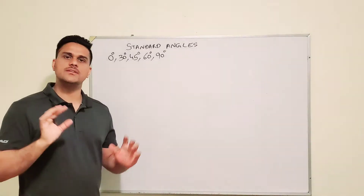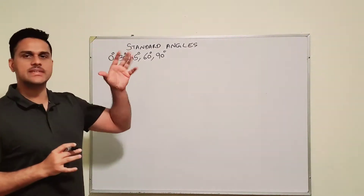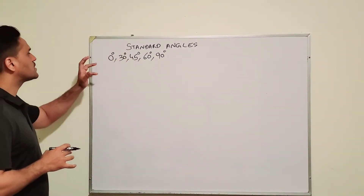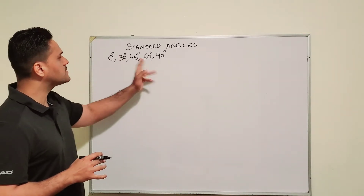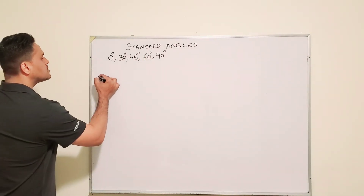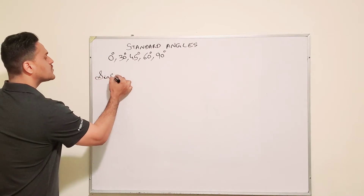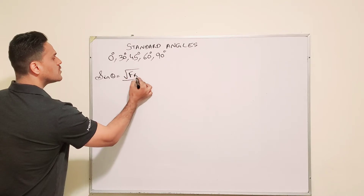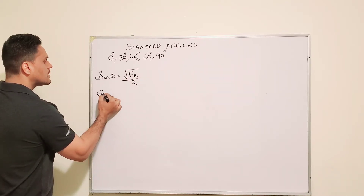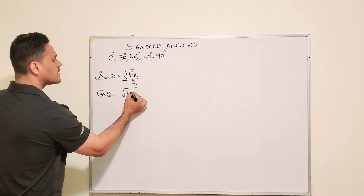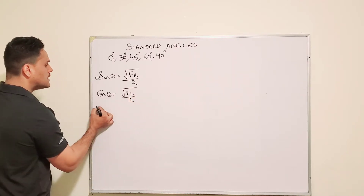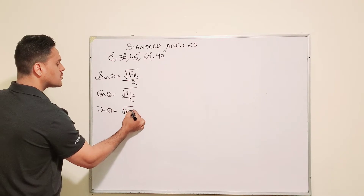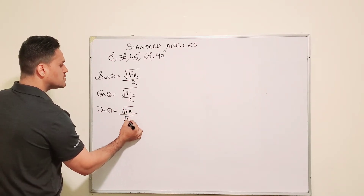Hi everyone, this is Jack Jeth and we're going to learn how to find sine, cos and tan of standard angles. Our standard angles are 0 degrees, 30 degrees, 45, 60 and 90. Now, I want you to remember these formulas: sine theta is square root of fingers on the right over 2. Cos theta is square root of fingers on the left over 2. And tan theta is square root of fingers on the right over square root of fingers on the left.